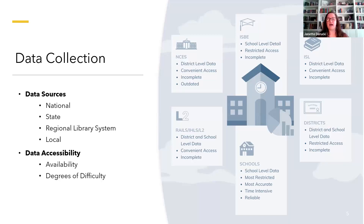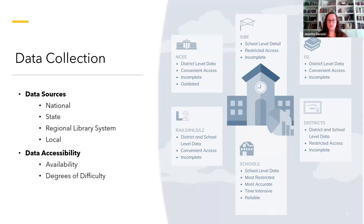What I'm referring to by data accessibility is how easily accessible the information is — part of the challenge is determining availability, who has the data, and what's the process to obtain it. The other is the degree of difficulty in acquiring it. Several sources are open and freely available; however, they often provide high level, less detailed information. To get the library data we are looking for, we often require sources with a higher degree of difficulty. This is where we're hoping you'll partner with us and provide insights into what's happening in your local schools through our upcoming surveys.